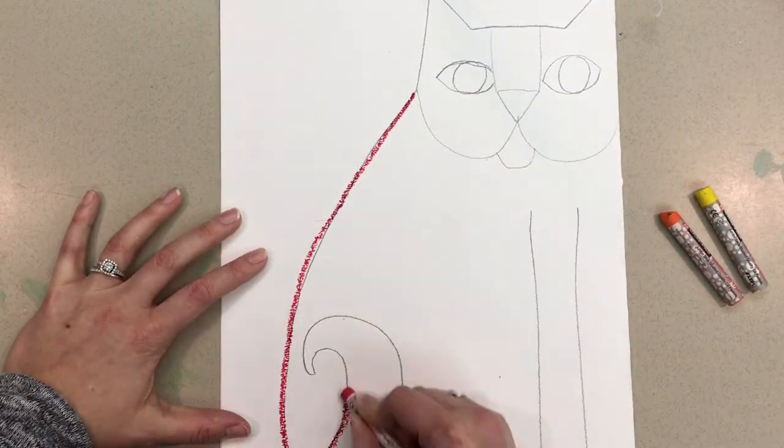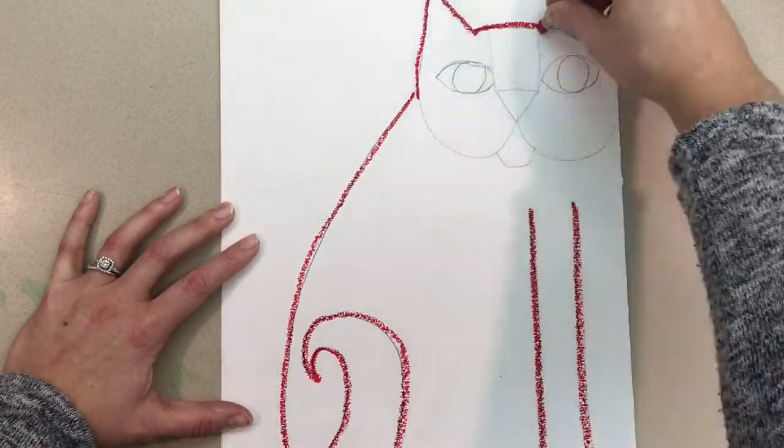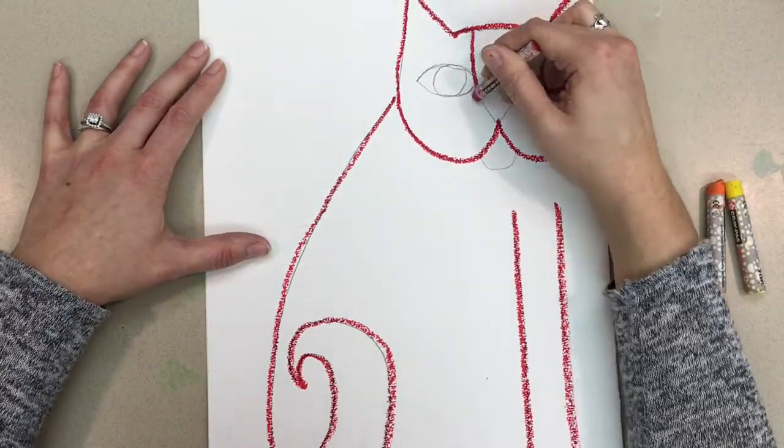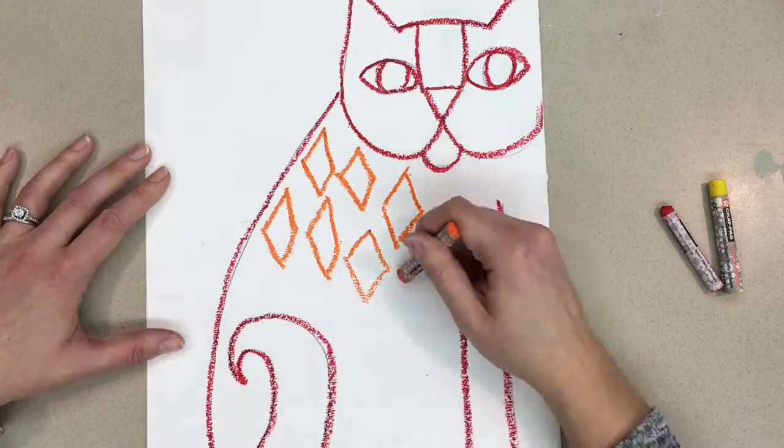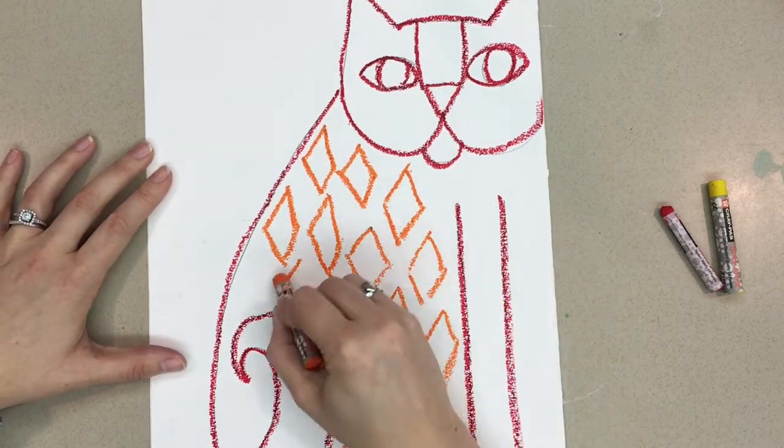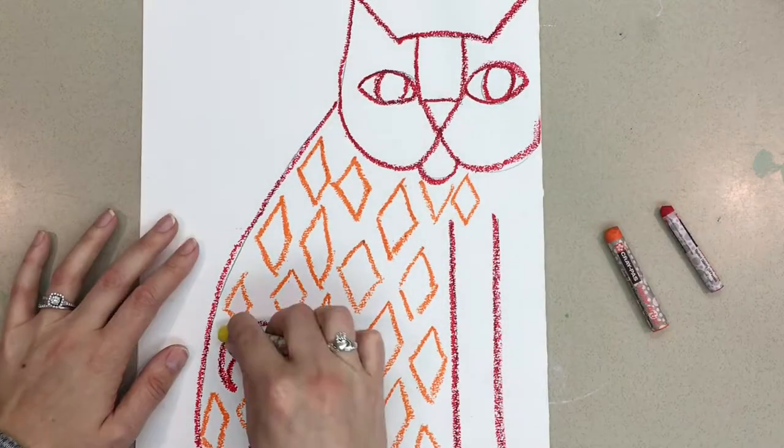I select the darkest color, red, to outline all of the pencil on my cat. I use the remaining two colors, orange and yellow, to fill the cat body, tail, legs, and face with patterns made of shapes and lines.